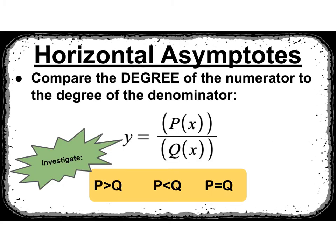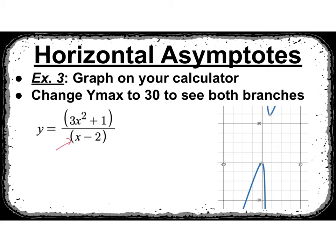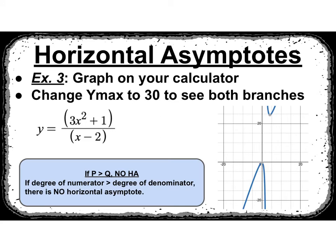Horizontal asymptotes — these are quite interesting. We compare the degree of the numerator to the degree of the denominator. We'll call the polynomial in the numerator p and the one in the denominator q. There are three ways to compare them: p greater than q, p less than q, and p equal to q. In this example, the degree of p is 2 and q is 1, so p is greater than q. When I graph it, I get a vertical asymptote at x equals 2, and I don't have a horizontal asymptote. So when p is greater than q, you will have no horizontal asymptote.